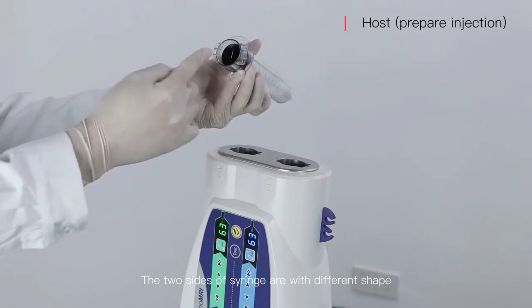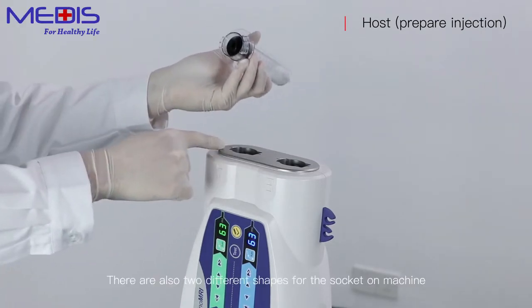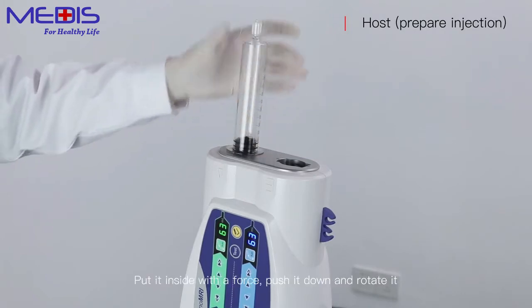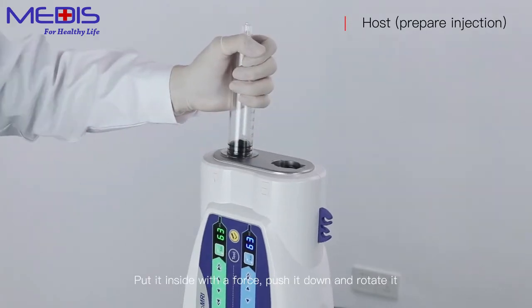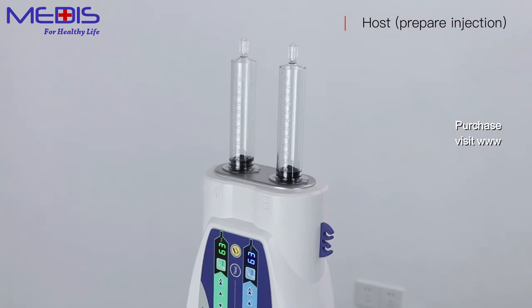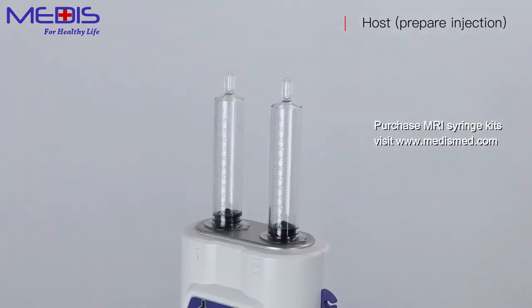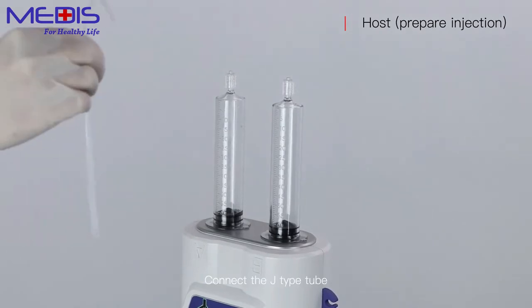The two sides of the syringe have different shapes. There are also two different shapes for the socket on the machine. Put it inside with force, push it down and rotate it, then connect the J-type tube.